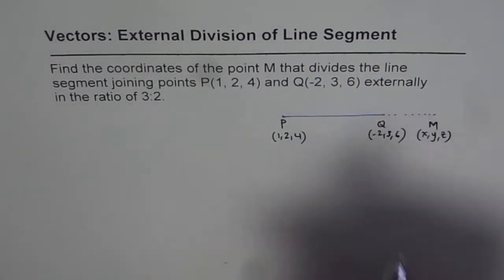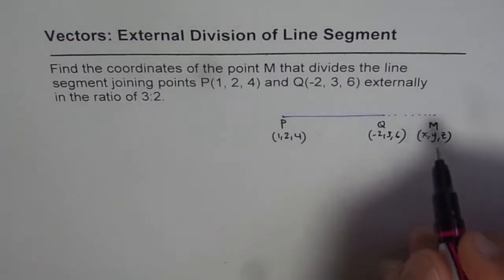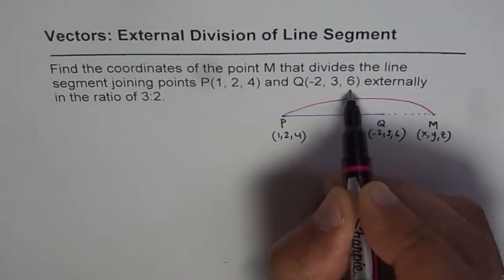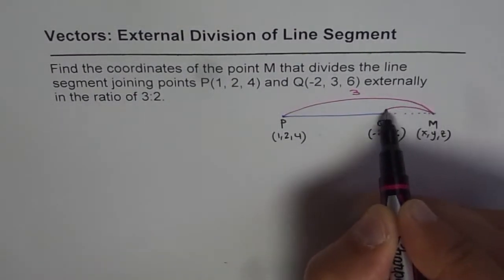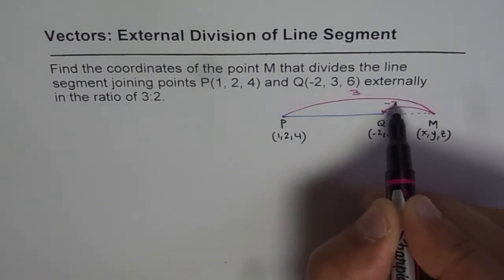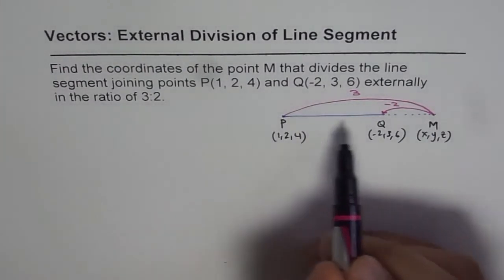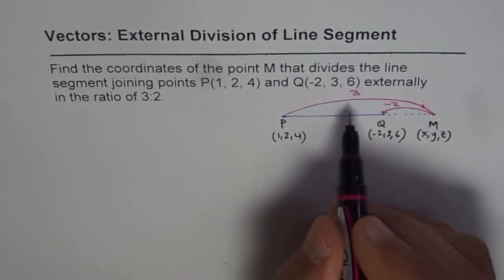Now, it divides PQ in the ratio of 3 to 2. This means if PM is 3, then QM, which we see in the negative direction, we write as minus 2. If we consider the direction toward right as positive, PM is positive 3.